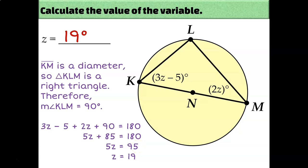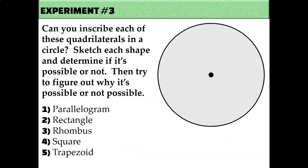That's all you need to know about inscribing right triangles in a circle. Now let's talk about inscribing quadrilaterals. Remember that inscribed means all of the vertices must be on the circle. Try to draw each of these five quadrilaterals inside the circle so that all four vertices are on the circle. See which ones are possible and which are not, and try to come up with a reason why. Pause the video and try it now.